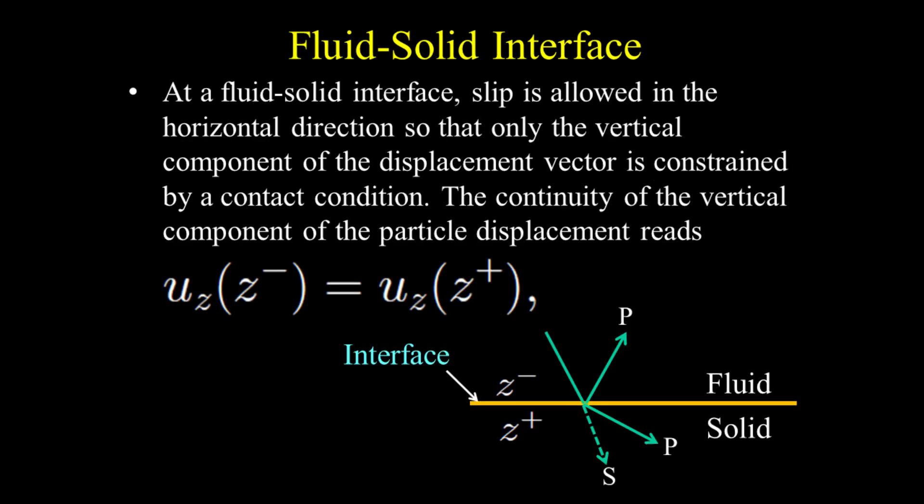Boundary conditions at the fluid-solid interface. The fluid-solid boundary can represent the sea floor. At this interface, the incident energy is partitioned into one reflection — that is, a reflected P wave, because fluid does not support S waves — and two transmissions, or transmitted P and S waves. So we need three boundary conditions to solve this energy partition problem.